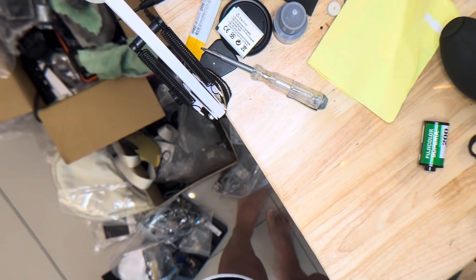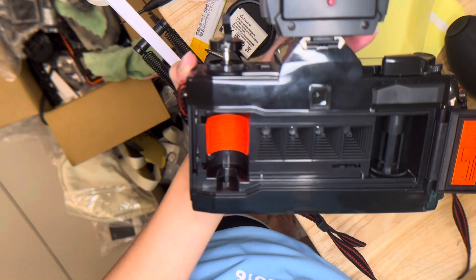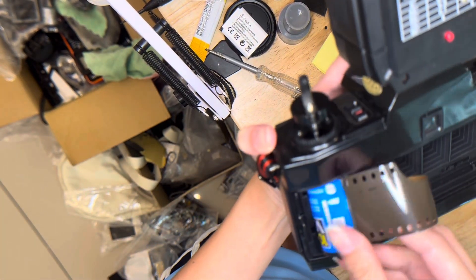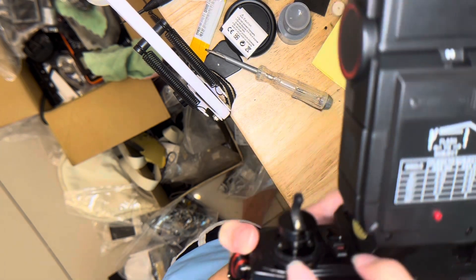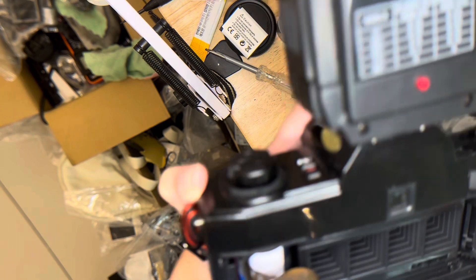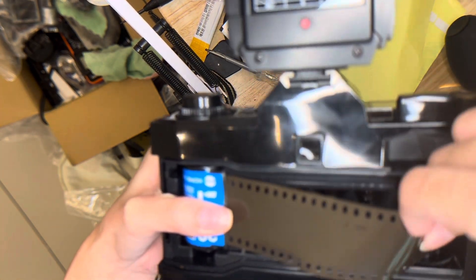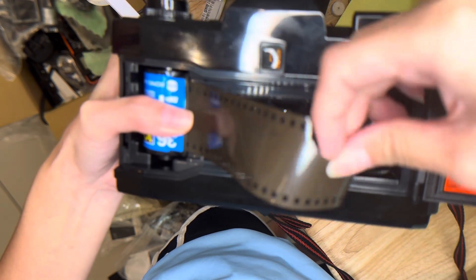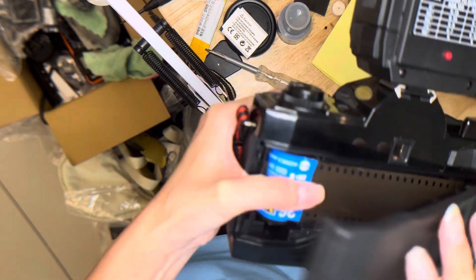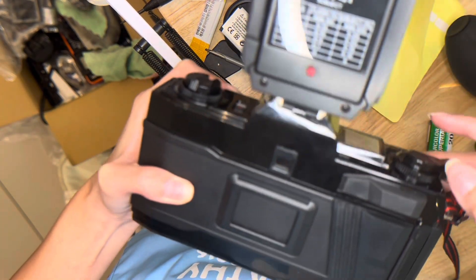For the flash and to insert the film, just like a normal camera, just insert here. Push it down, insert it into the slit. Then you wind, close the back, and then you can start shooting.